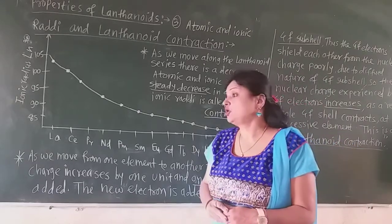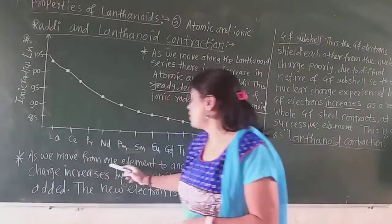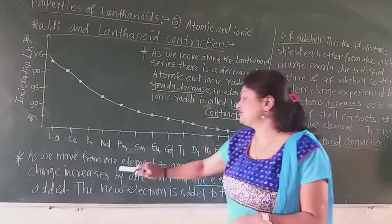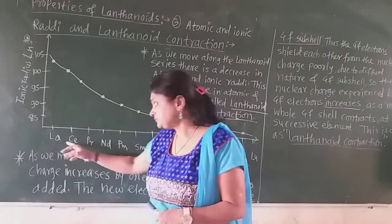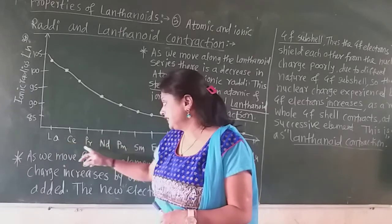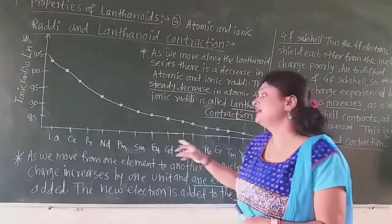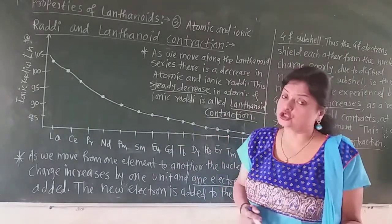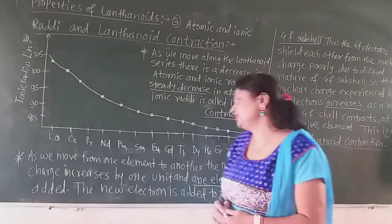Now what is the reason for this lanthanoid contraction? As we move from one element to another, the nuclear charge increases by one unit. That means cerium has one proton more than lanthanum, and praseodymium has one proton more than cerium. So the atomic number increases by one unit, meaning the number of protons — the nuclear charge — also increases by one unit.